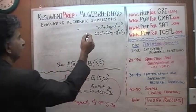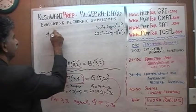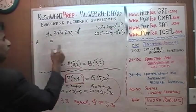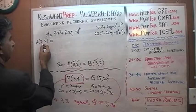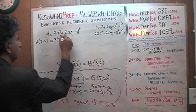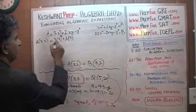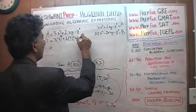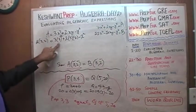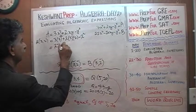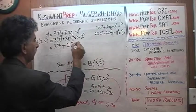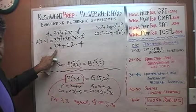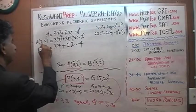Expression A equals 3x squared plus 2xy minus y squared. A of 3, 2: replace x by 3 — 3 times 3 squared plus 2 times 3 times 2 — replace y by 2 — minus 2 squared. 3 squared is 9; 9 times 3 is 27. 2 times 3 times 2 is 12. Minus 4. So it's 27 plus 8, which equals 35.